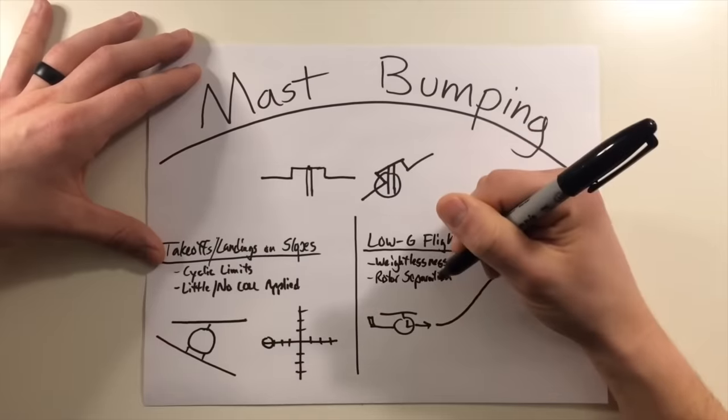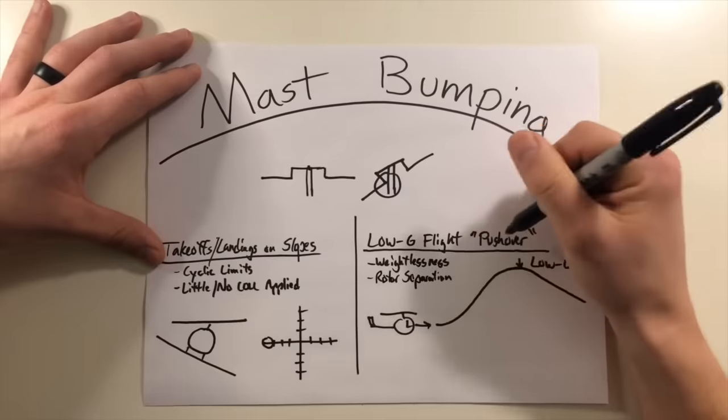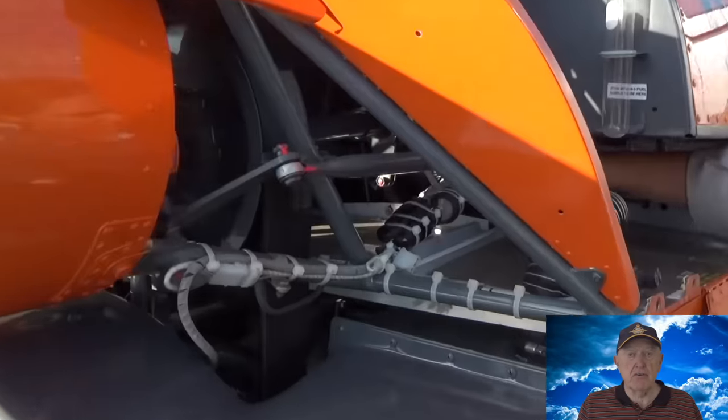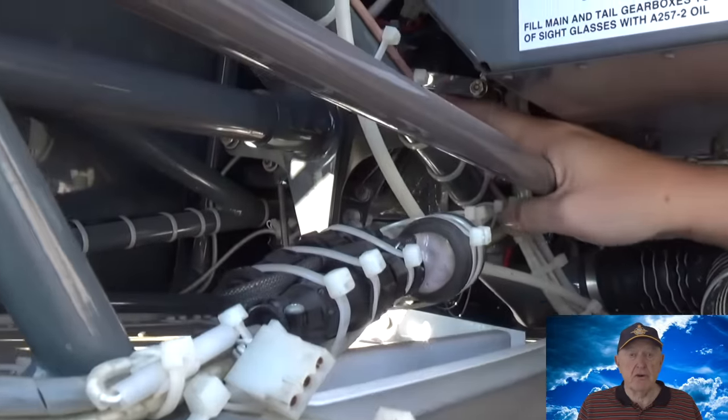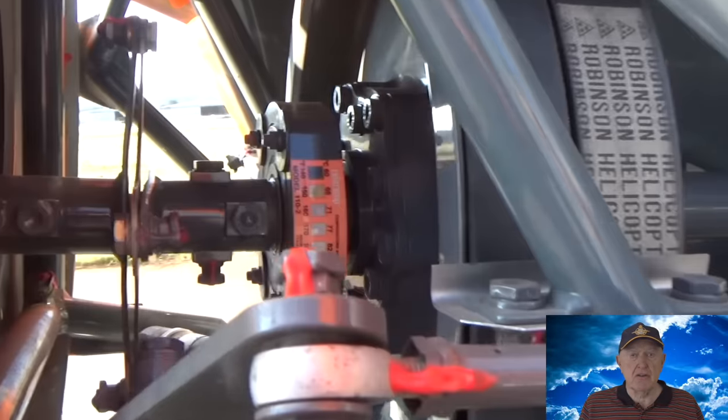Now the way to prevent mast bumping for semi-rigid rotor systems is just avoid these pushover conditions altogether. The Robinson R22 has a semi-rigid rotor system subject to rotor bump if certain conditions are met.